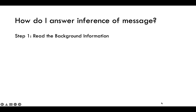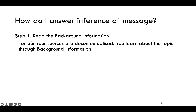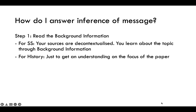Step one: always read the background information. This is especially important for Social Studies because all your sources are decontextualized — you wouldn't know about the topic unless you're very well read. Students who skip background information often misinterpret the source. For history, reading background information helps you understand the focus of the paper, just in case you blank out on the topic.